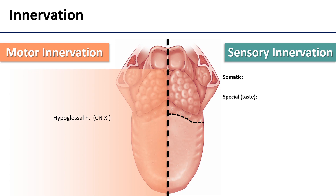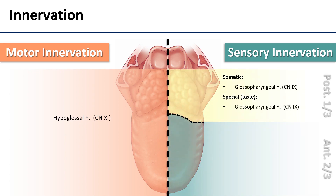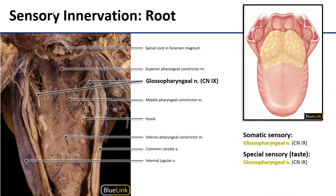The posterior sensory innervation is going to be carried entirely by the glossopharyngeal nerve — both the somatic touch sensory and the special taste sensory are carried on glossopharyngeal. The glossopharyngeal nerve exits the cranium through the jugular foramen along with the vagus and accessory nerves, makes its way down into the pharynx by riding on the posterior surface of the stylopharyngeus muscle, and slips in between the borders of the superior pharyngeal constrictor and the middle pharyngeal constrictor. Once it enters the pharynx, it distributes its branches via the pharyngeal plexus, and some of those make their way to the posterior tongue.